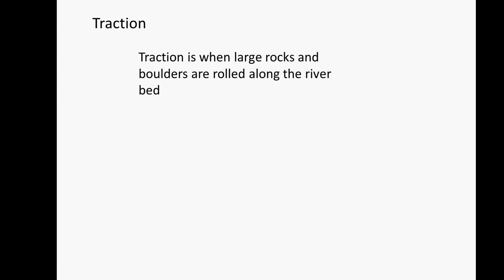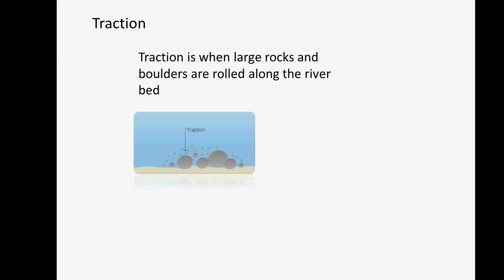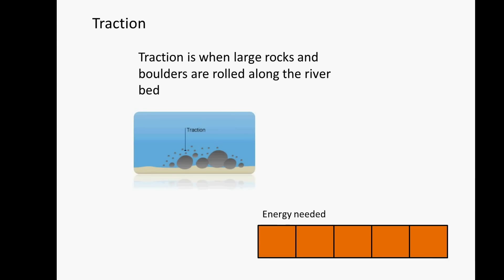If there is enough energy in the river, large rocks and boulders can be transported by traction, where they are rolled along the river bed by the water. Sometimes in storms, when there is a lot of energy in the river, trees and other debris can be transported. Of all the types of transportation, this needs the most energy and so has a full energy bar.